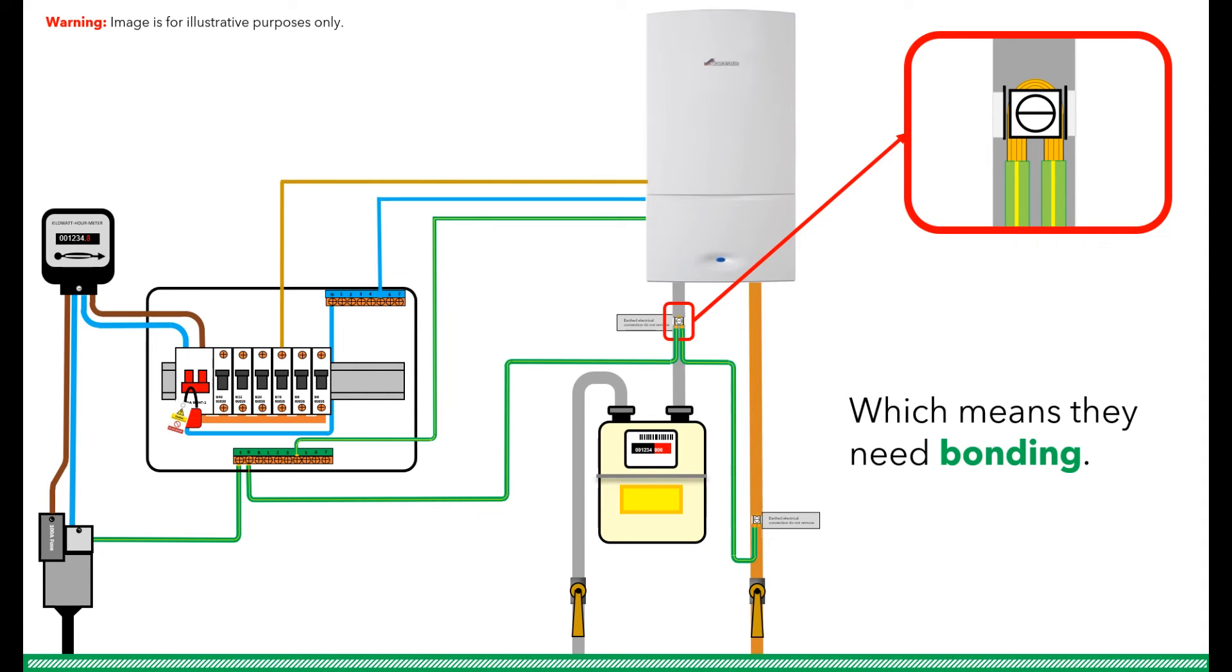This means that there is another extraneous conductive part that needs bonding too. And if you use the same cable for both, remember that it needs to be uncut or unbroken, so that if the first clamp comes off or is loose, the second clamp is still effective and sufficient. As you may have noticed by now, other trades have a habit of removing the first clamp when altering pipe work and not reinstating the clamp afterwards, which means the bond to both pipes could be simultaneously lost.